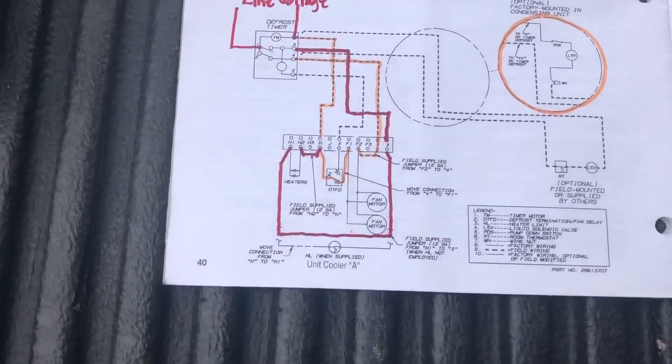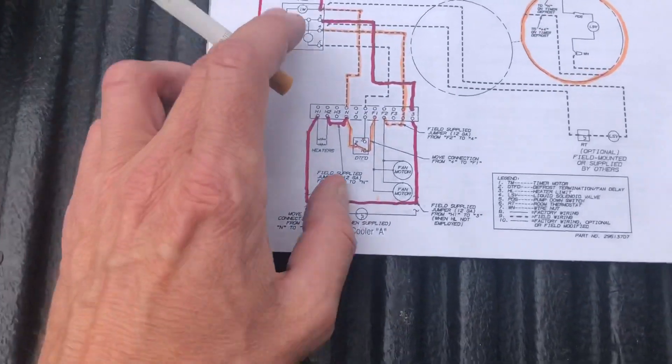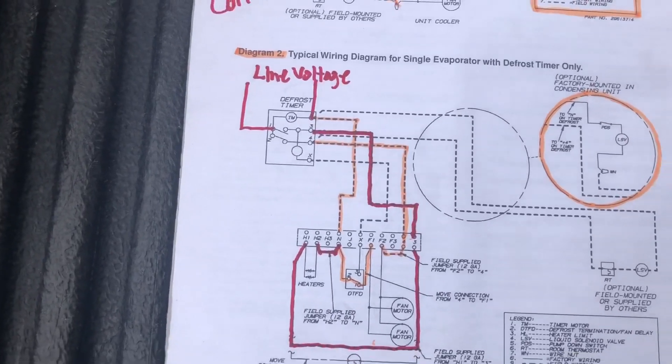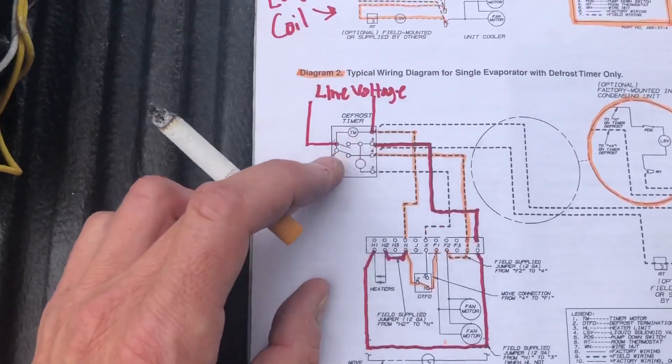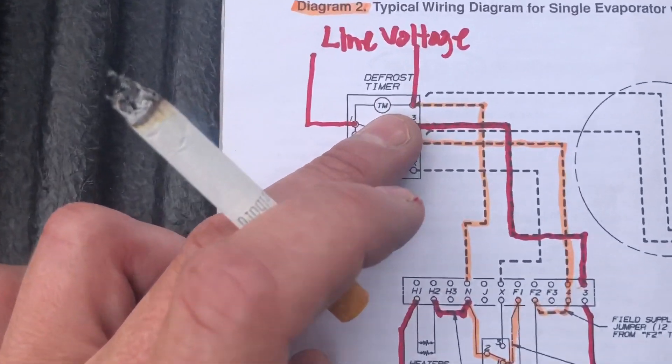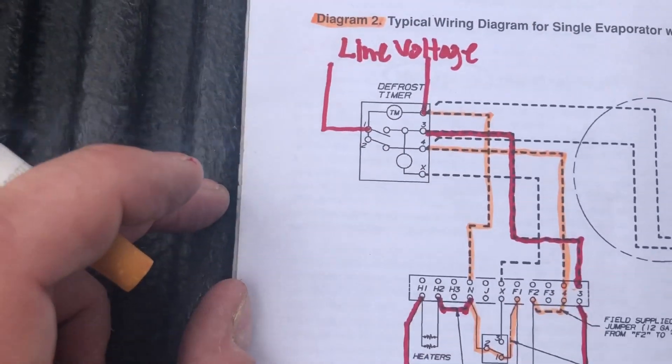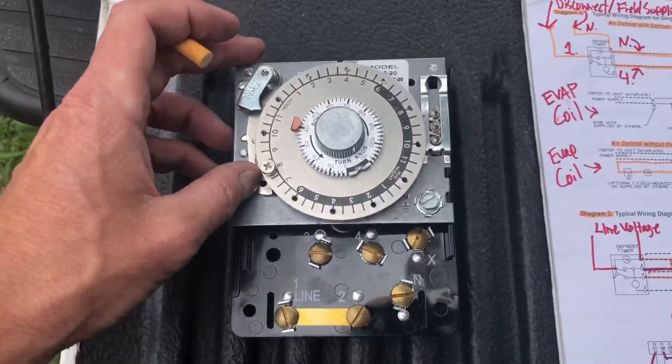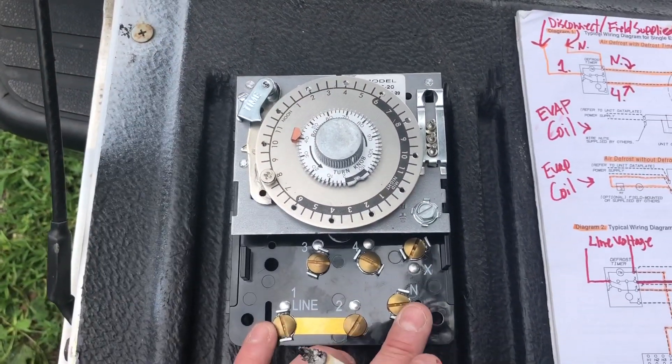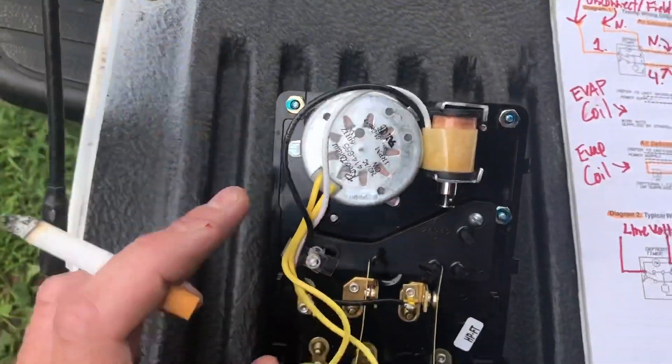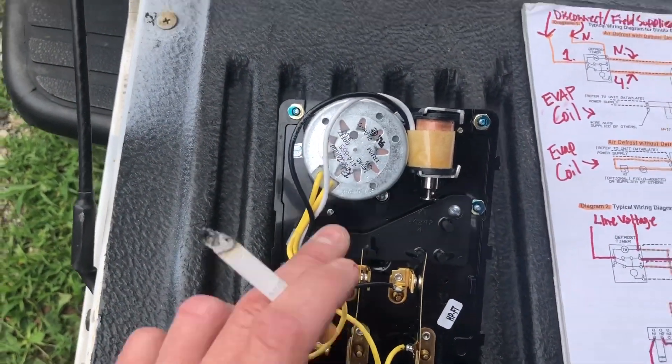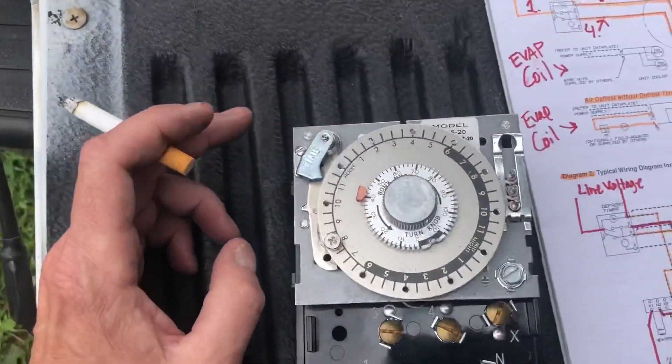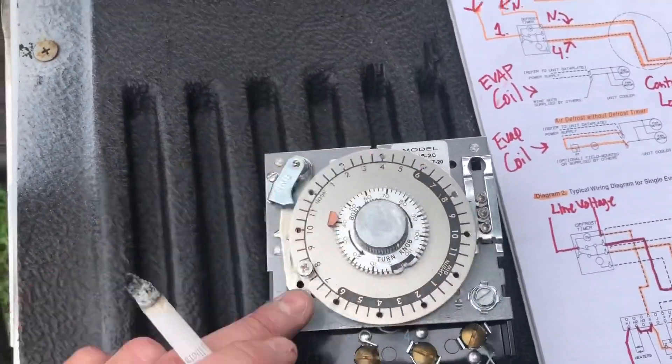How we're gonna start is we have our line voltage coming in. We're gonna go with this being a 208-230 volt system. We have our line voltage coming in which is always going to power our timer motor on 1 and N, which is here. Here's your basic Paragon clock, this is 8145-20. So we got 1 and N with our lines coming to it. They are going to be powering this right here, our timer motor, which runs 24/7 every day. And that's what spins around, and when it hits one of these pins over here it clicks into our defrost cycle.